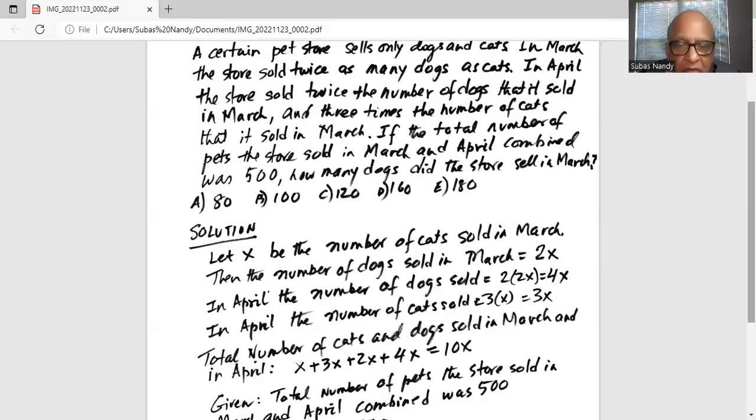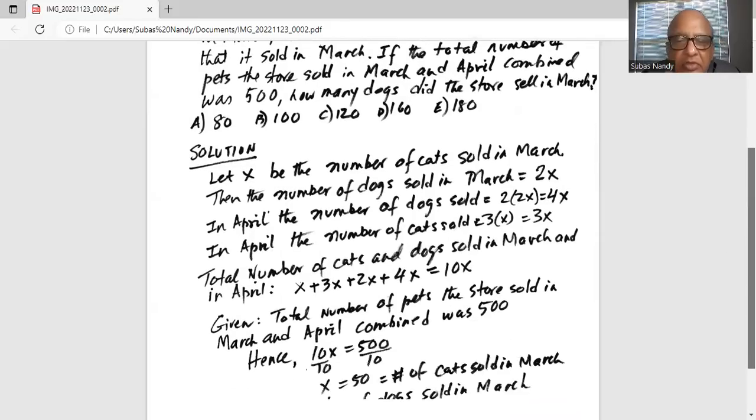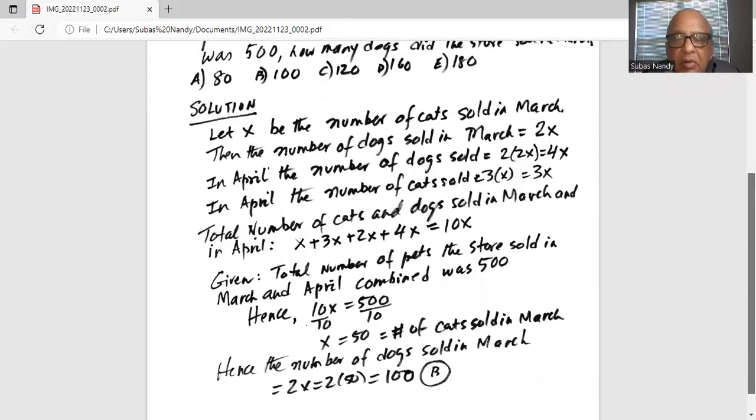So the total is 10x. And now it is given to us that the total number of pets the store sold in March and April combined was 500. So 10x equals 500, divide by 10 on both sides to get x equals 50, which is the number of cats sold in March.